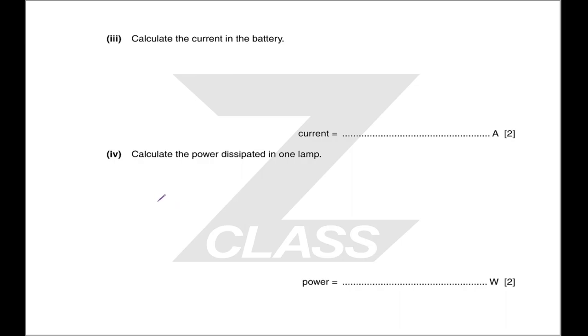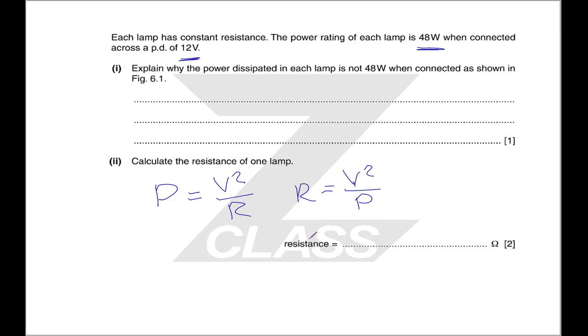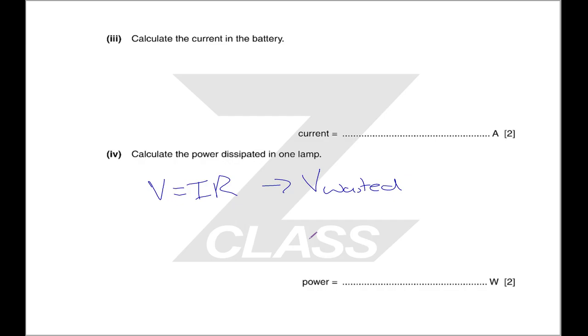Calculate the power dissipated in one lamp. So we know the current. Better way of looking at it is we know the voltage. We know the current in the battery. If we know the current, we have V equals IR. We can use this to calculate the voltage that is being wasted across our internal resistance. And therefore, we know that whatever's left is the voltage being put across the lamps. And at that point, you can once again use P equals V squared over r to get the power in the lamp. You know V, you already know the resistance of the lamp. And there we go.